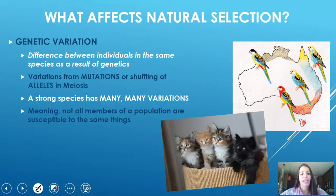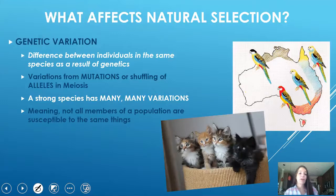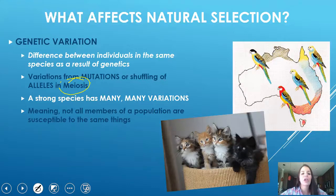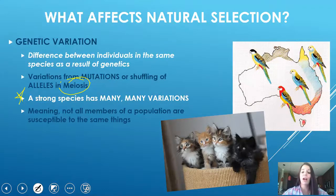Finally, there is genetic variation — the differences between individuals. You look different from your mom, dad, siblings, cousins, and friends because everybody has a little variety. Those variations, going back to the concept of meiosis, come from the shuffling of alleles. A key concept: a strong species has many, many variations. If everybody has the same DNA, you're very susceptible to losing your species or experiencing a big population decrease.